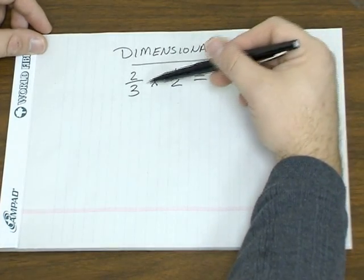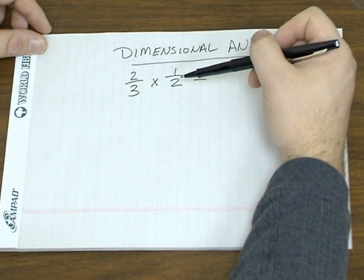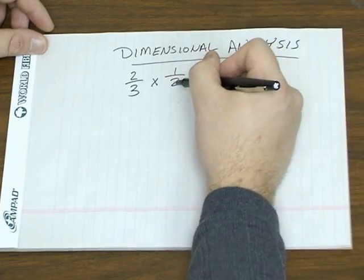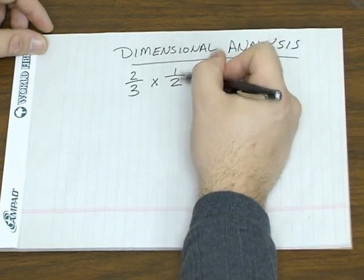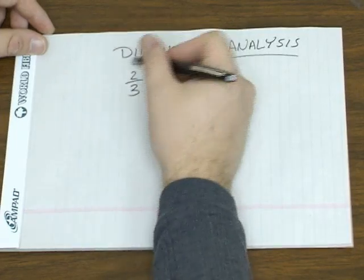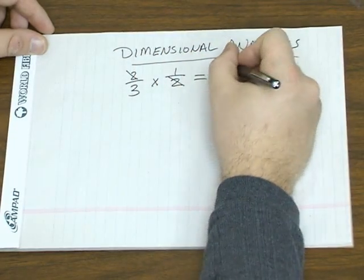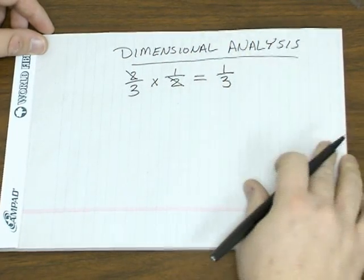For example, you multiply 2/3 by 1/2. Most kids are taught that when the twos are across from each other like this, when one's in the numerator and the other's in the denominator, they cancel out. So you get 1/3.